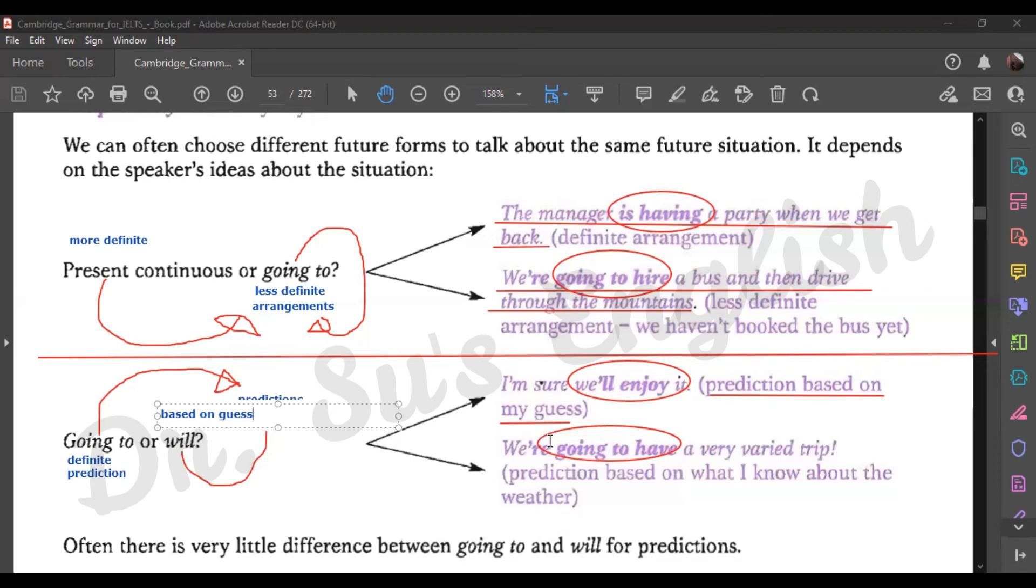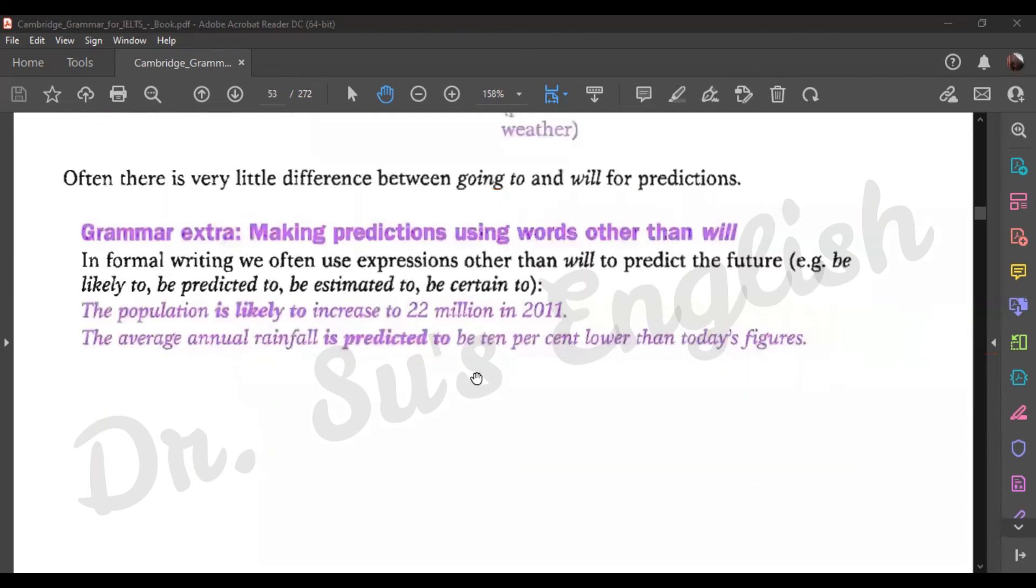Will is based on guess. You get the idea. This is the summary of these ways of using the future. This one we can skip.